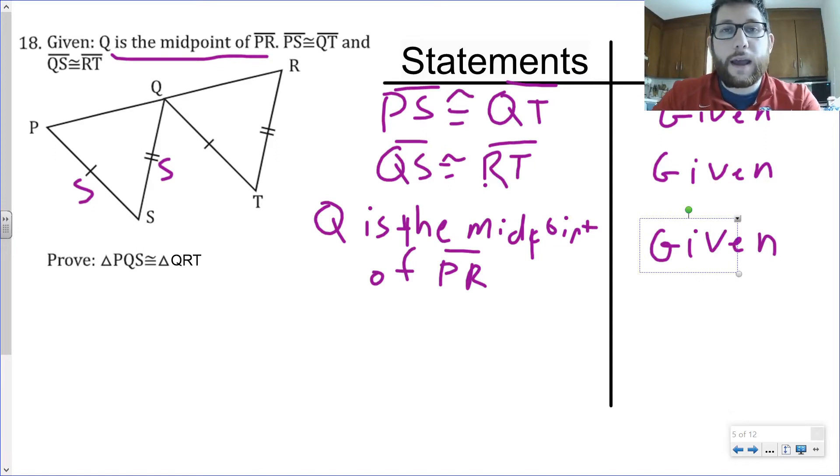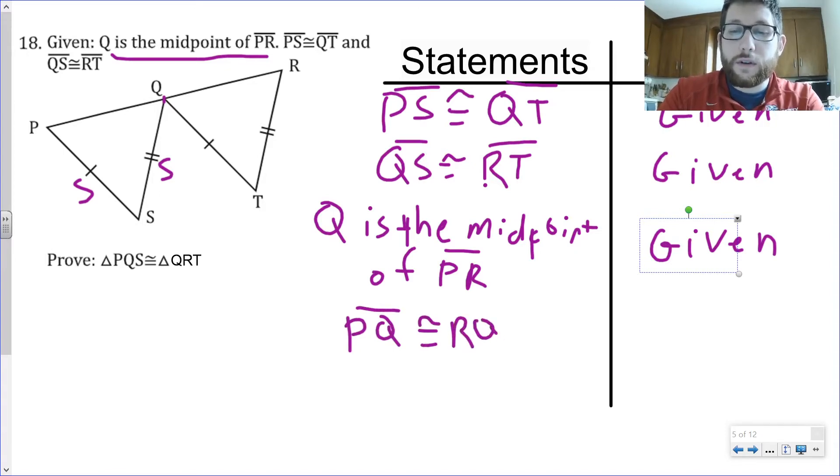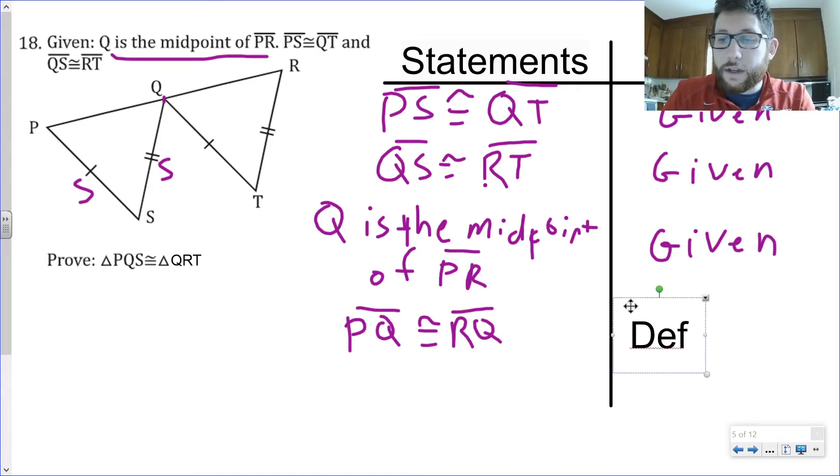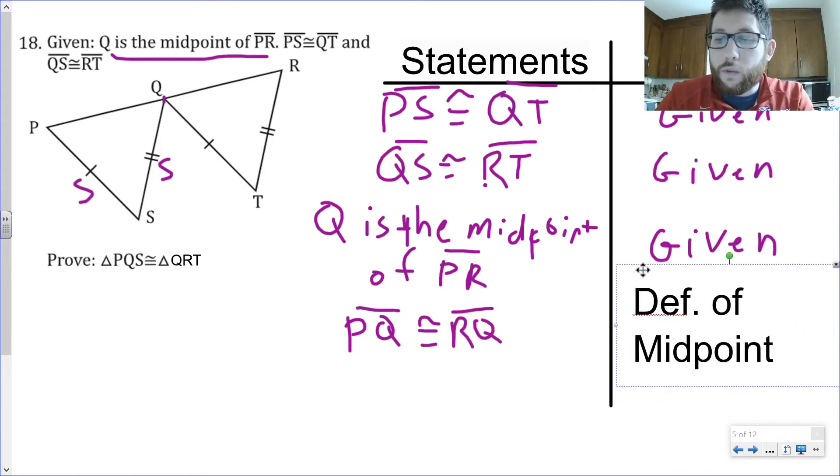We're going to have to do some more work with this statement. We also know Q is the midpoint of PR, and that is also given. Now, that needs to either help us find a side or an angle. If Q is right in the middle of PR, what do I know about PQ and RQ? Well, I should know that PQ and RQ are the same size because Q is right in the middle. So now PQ is congruent to RQ. I know that because it's the definition of midpoint.